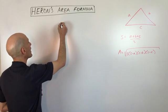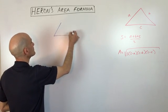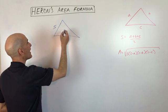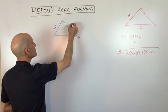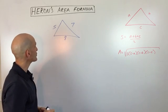So say, for example, our problem looks like this. Say it's five, let's say maybe seven and eight. Those are our three sides of our triangle.